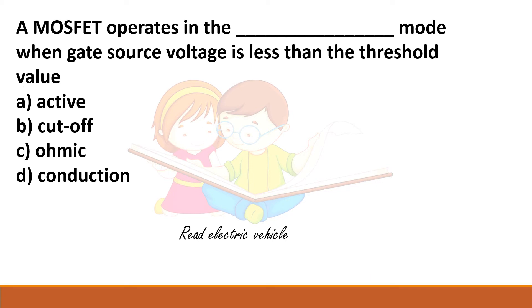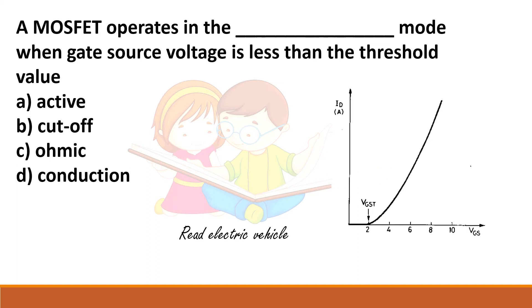A MOSFET operates in cutoff mode when the gate-source voltage is less than the threshold value. From the graph of drain current versus gate-source voltage, when VGS is below the threshold, the current is zero — meaning the device is off. So the answer is cutoff mode.